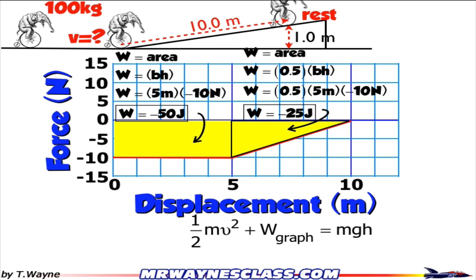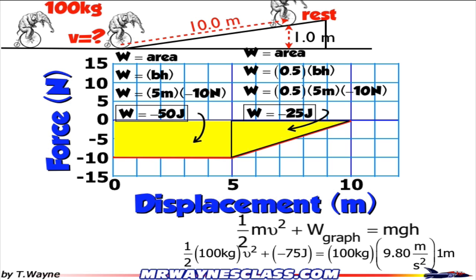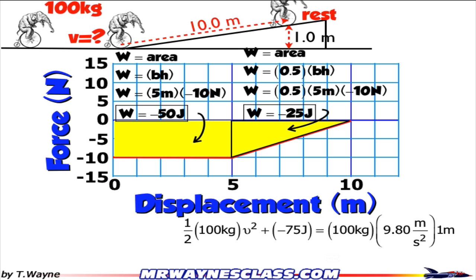Next step, numbers and units. Notice for the work of the graph, I just put in my answer that I calculated earlier of negative 75 joules. And then from there, I solve. And I get that the speed of the elephant at the bottom of the hill is 4.59 meters per second.